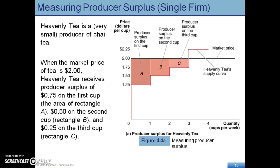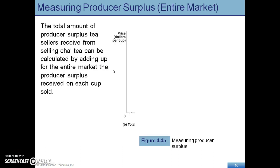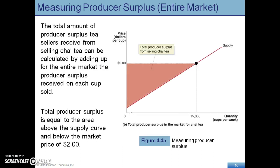Producers are going to be looking at how much they're willing to supply a good based on how much they get. For example, there's one firm here willing to sell a cup of coffee for $1.25. However, they're actually getting $2 in the market, so they're grabbing some of that surplus because they're getting more than they should. Producer surplus is looking at anything below the price and above the supply curve — so $2 minus anything above the supply curve. That's the producer surplus.